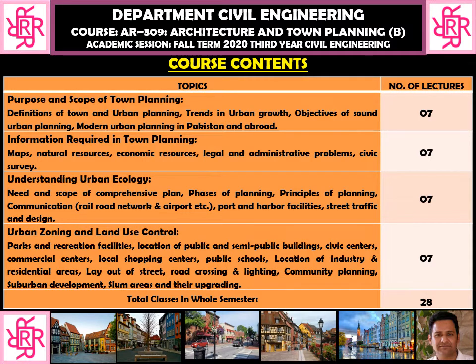The third theme of this course is understanding urban ecology. Ecology is the balance in nature, so understanding urban ecology means understanding the balance in the nature of the city — how people are living and what their needs and wants are. Then we look at the need and scope of the comprehensive plan, which is like a master plan for how the city will grow over the next decades. We also look at the phases of planning and principles of planning — for example, health is a basic issue, so we design the city by considering health conditions.